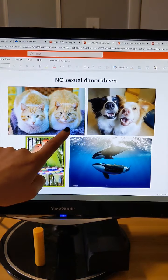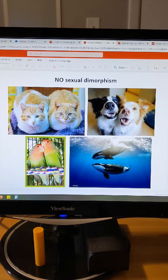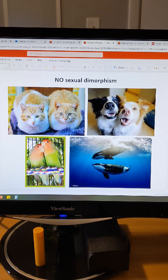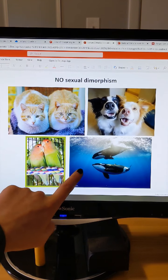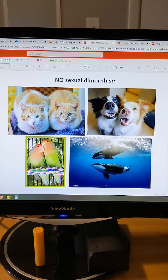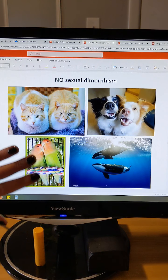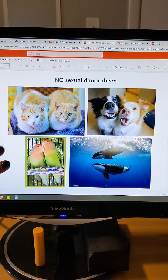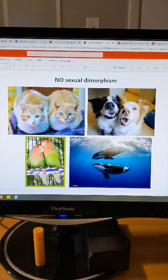There are lots of organisms that do not have sexual dimorphism. For example, dogs and cats. Looking at this picture, you can't tell which one is a male and which one's a female. One is a male and one is a female, same for these lovebirds and these orca, but their overall body form does not look different. Their genitalia is different, but nothing external about them besides the genitalia gives away their sex.